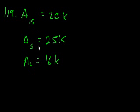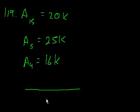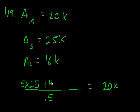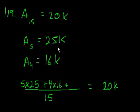Let's find the average of all 15 employees. We sum up all their salaries, divide by 15, and that equals 20,000. We have five people making $25,000, so the sum of their salaries is 5 times 25,000. Then four people making $16,000, so plus 4 times 16. Summing everyone's salaries in the numerator divided by 15, plus 6 times the average of the remaining people — there are 6 people remaining since we've accounted for 9 — gives us the total. Whatever the average of those 6 is times 6 gives the sum of their salaries, and then we solve.